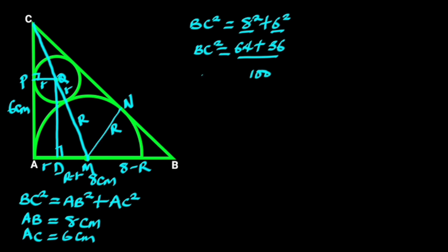Hence BC² is 100. Next we find BC by taking the square root of both sides. Doing so gives us BC equals the square root of 100, which is 10 centimeters.